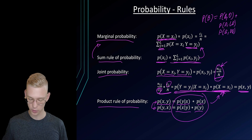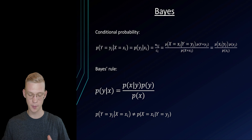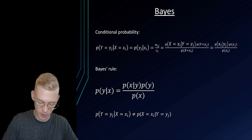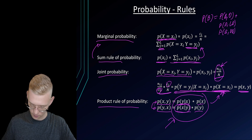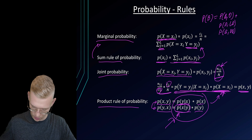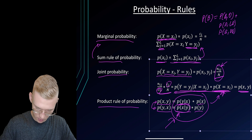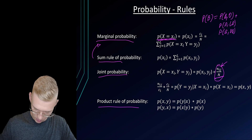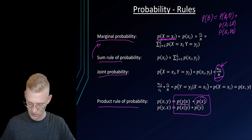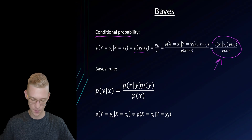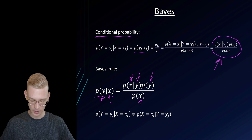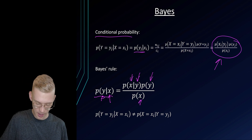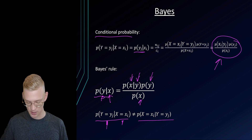If we now use this product rule and reformulate it to give us one term, we arrive at Bayes' rule, which is very, very important and will be used many many times in machine learning. We take the product rule and reformulate: the probability of y given x equals the probability of x given y times the probability of y, divided by the probability of x. In general, remember that probability is not symmetric — probability of y given x is not the same as x given y.